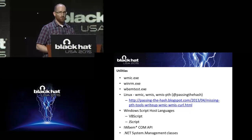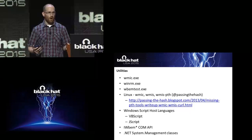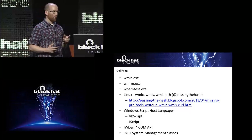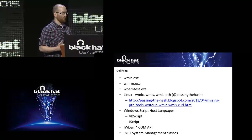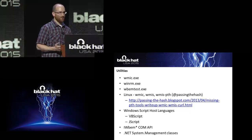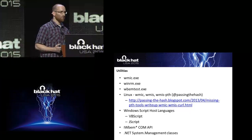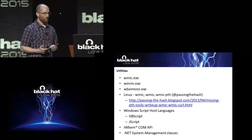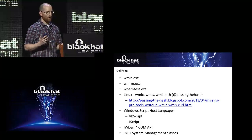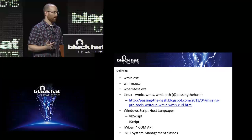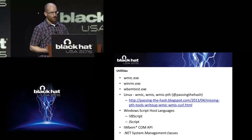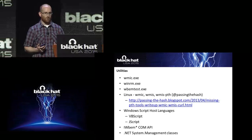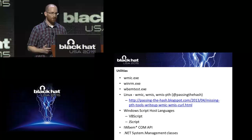Some additional utilities: WMIC.exe is a really powerful utility though it does have some limitations — PowerShell is always going to be the best way to work with this stuff. There's WinRM — I'll use WinRM and PowerShell remoting interchangeably. If application whitelisting blocks PowerShell, you could still use WinRM to enumerate WMI object instances and execute WMI methods. WBMTest is a really crappy GUI interface, but it's a good fallback in cases where you can't run WMIC.exe or PowerShell.exe — there's pretty much nothing you can't do with regards to WMI via this tool.